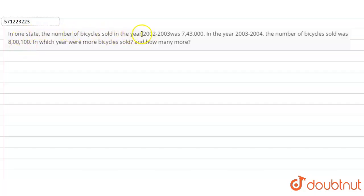the number of bicycles sold in the year 2002-2003 was 7,43,000. In the year 2003-04, the number of bicycles sold was 8,00,100. In which year were more bicycles sold and how many more?